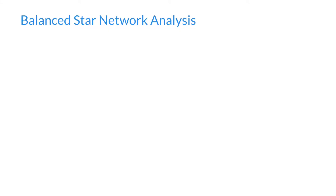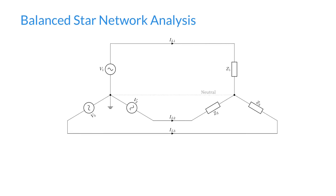Hello and welcome to this video in which we're going to examine mathematically and hopefully calculate some currents in a balanced star network. Here's an example of such a network. We have a star connected source or voltage source connected to a star connected load made up of three impedances.